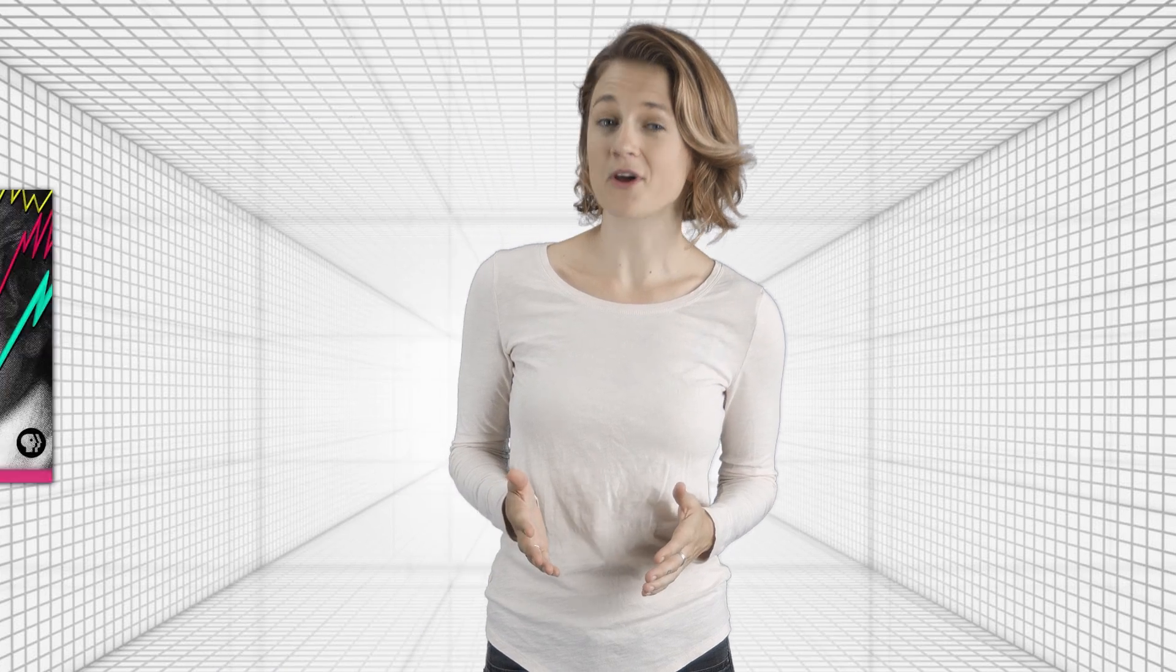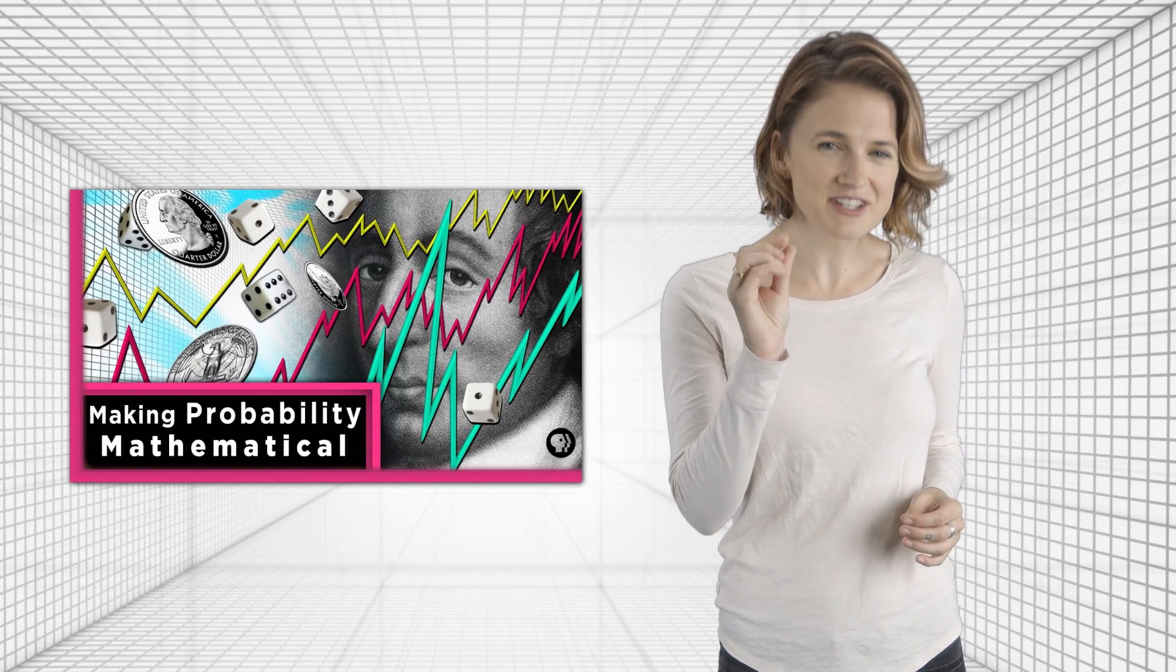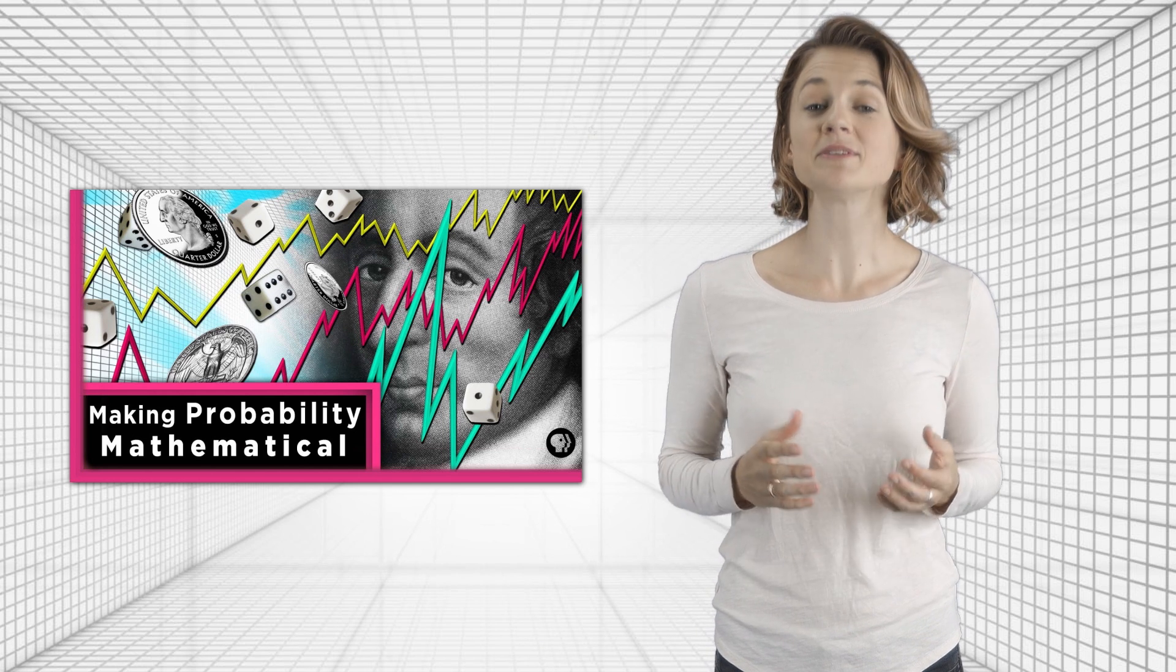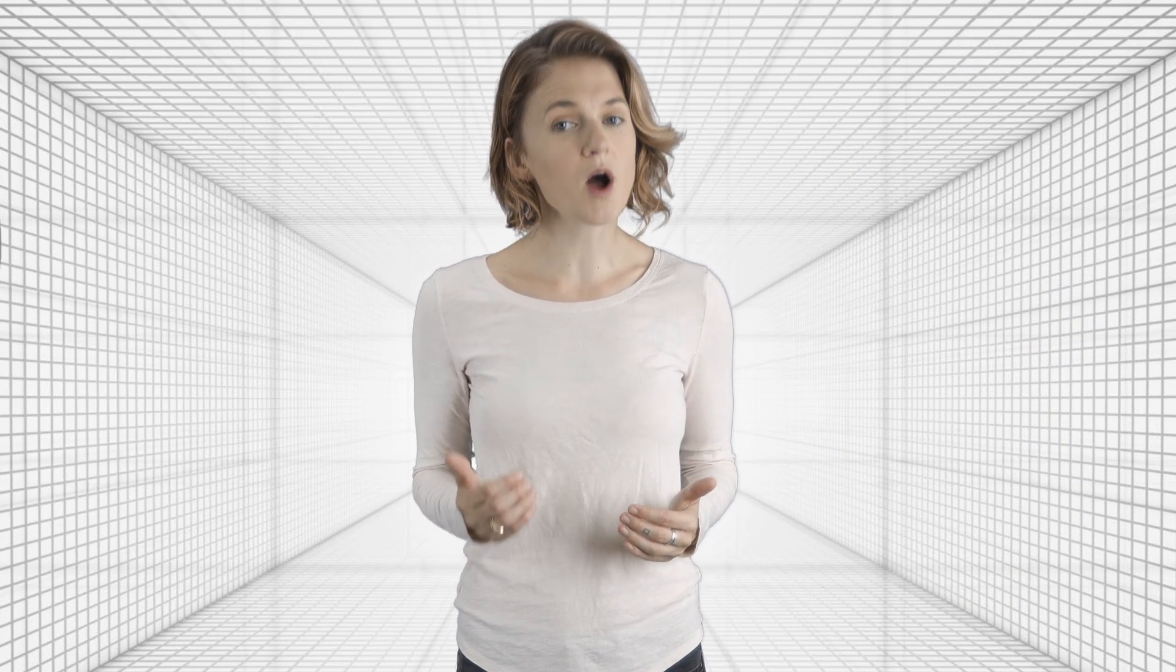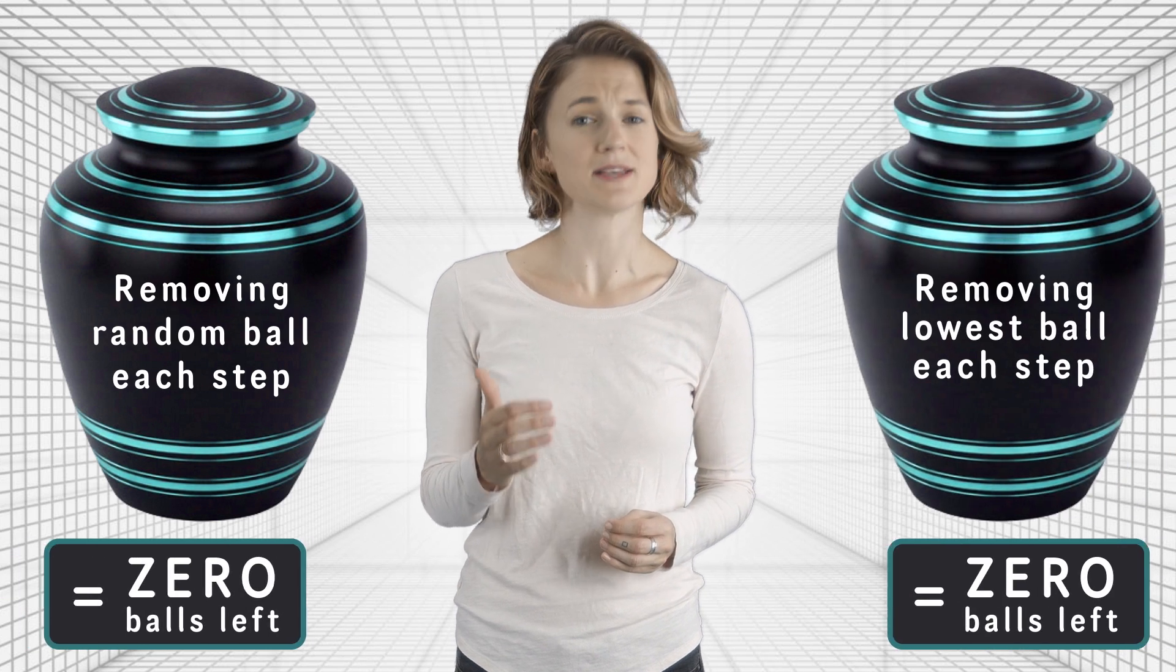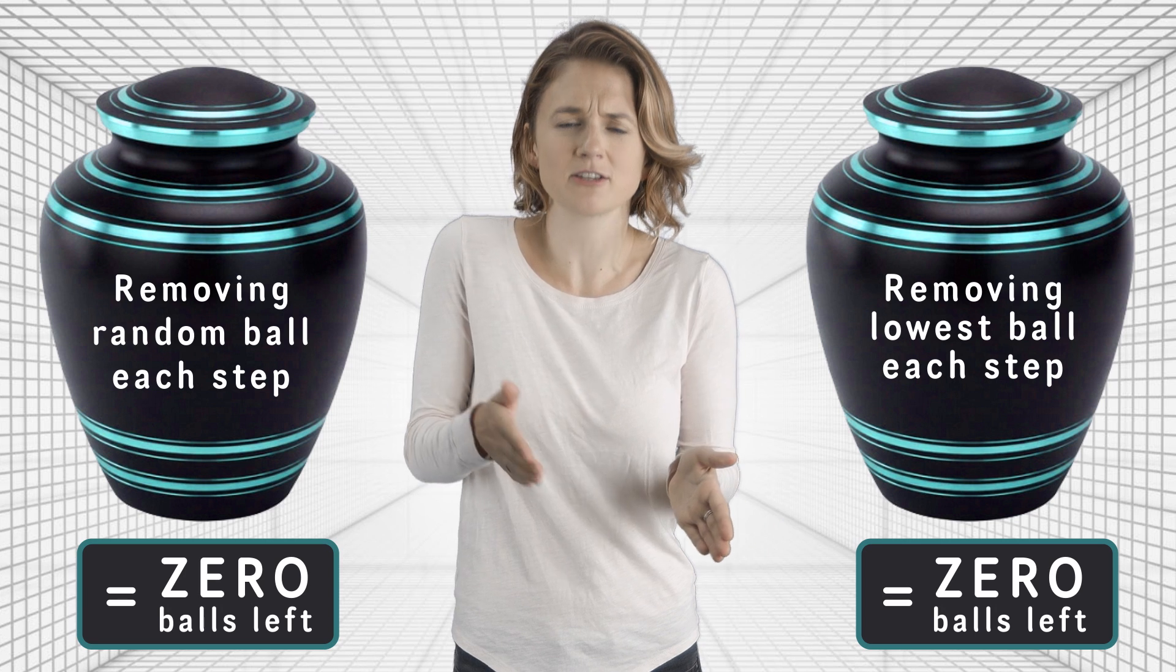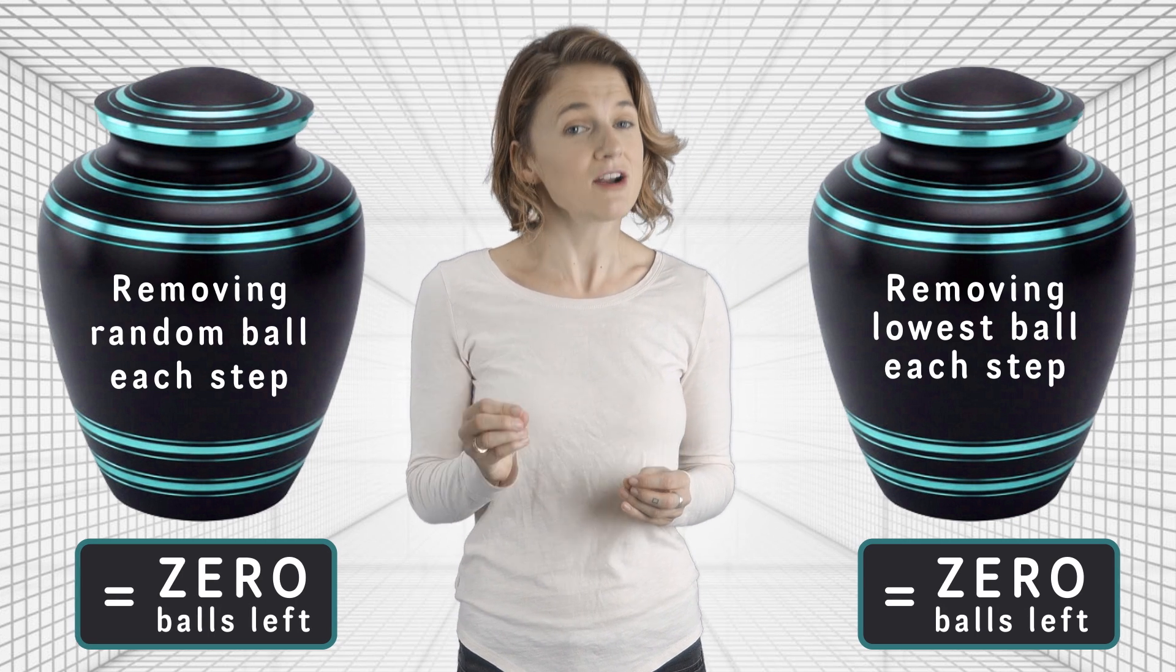Remember from our episode on making probability mathematical, that this is like hitting a single, infinitesimal point on a dartboard. It's possible, but happens 0% of the time. So, with probability one, removing one ball at random actually results in the same outcome as always removing the lowest ball, which seemed like a very particular procedure with a paradoxical outcome. But the paradox persists in the stochastic or randomized supertask.